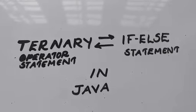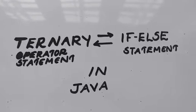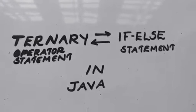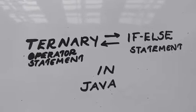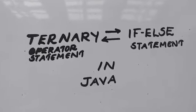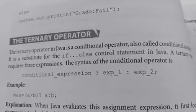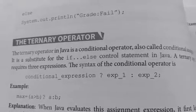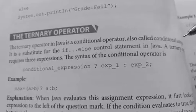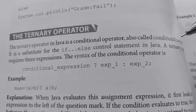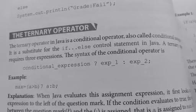Welcome back students. Today in this class we are going to study how to convert a ternary operator statement in Java to an if-else statement, and an if-else statement in Java back to a ternary operator. This type of question will be asked for your board exam. We have already studied about the ternary operator. The ternary operator is a decision-making statement in Java, also known as a conditional operator. Another name for the ternary operator is conditional assignment — it is a substitute for the if-else control statement in Java.